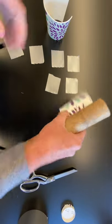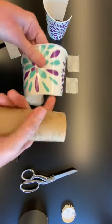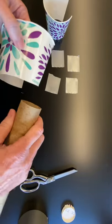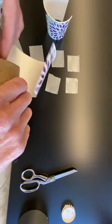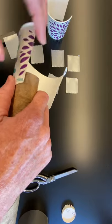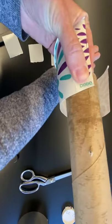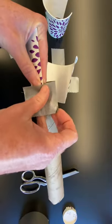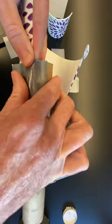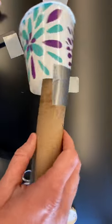Alright, next step. I'm going to take the bottom of the cup that I cut out and line it up with one side of the paper towel roll, so it's maybe down just about the width of my finger. I'm going to hold it with one hand, grab one of my pieces of tape, and tape it down like this.